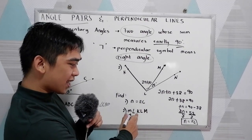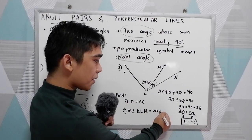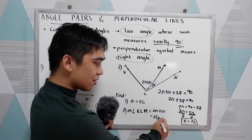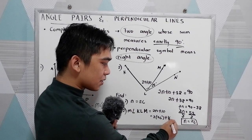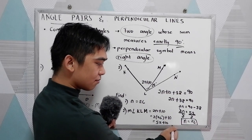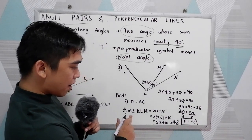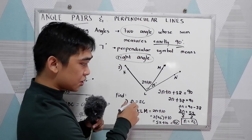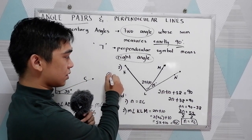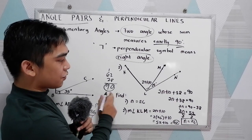Now we need to get the measure of angle KLM. We know that KLM equals 2N plus 10. Since we have the value of N, we substitute: 2 times 26 plus 10. 2 times 26 is 52, plus 10 gives 62 degrees. So the measure of angle KLM is 62 degrees. To check: 62 plus 28 equals 90. Yes, it equals 90, so the answer is correct. That's the complementary angle.